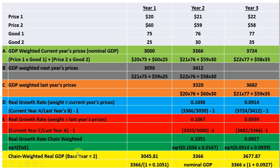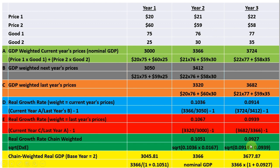Now we calculate the chain-weighted real growth rate based on a geometric mean: we take the square root of D times E. For year two, using D and E for year two, we get a chain-weighted real growth rate of 10.51%. For year three, we compute the square root of 0.0914 times 0.0939.